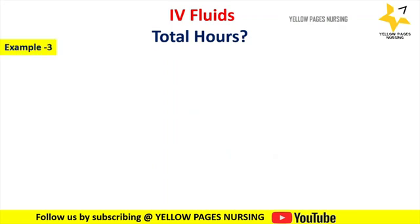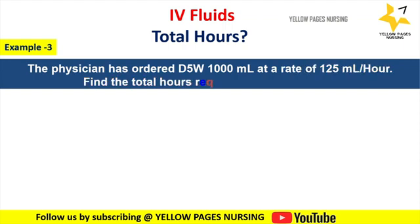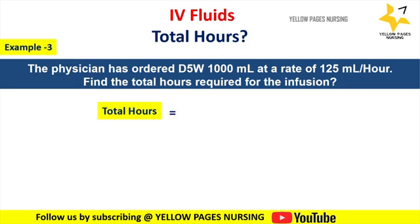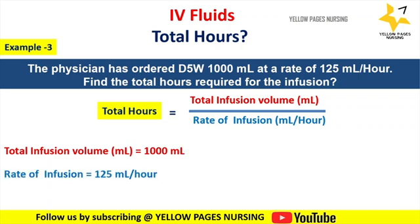Next, let's do calculation of total hours or duration. The physician has ordered D5 water 1000 ml at a rate of 125 ml per hour — find the total hours required for the infusion. The formula to calculate total hours is: total infusion volume in ml divided by rate of infusion in ml per hour. Here, total infusion volume is 1000 ml and rate of infusion is 125 ml per hour.